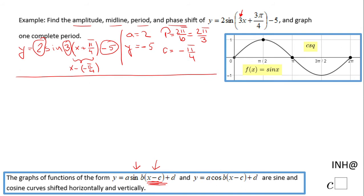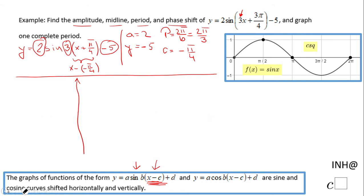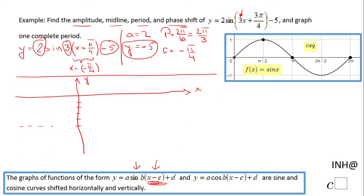Having all these elements, we can graph one complete period. I'll draw x and y axes, but since the midline is y equals negative five, I need more of quadrants three and four. I'll move the x-axis up and mark five units down as the midline, then highlight it in a different color to emphasize it.